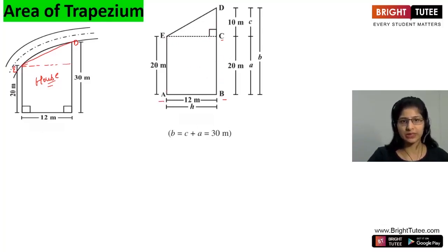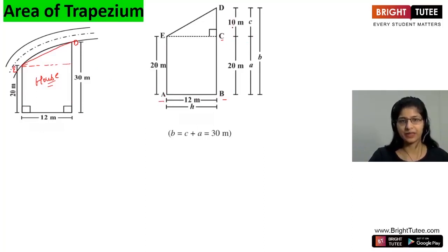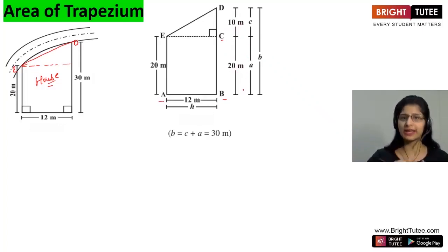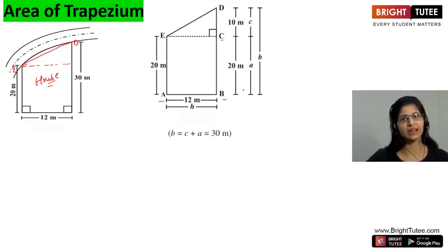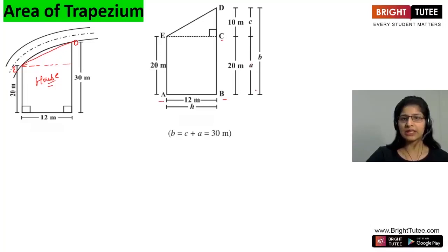Now suppose this is 20 metres — it is given to us in the question. And this is 12 metres. Now if this is 20 and the total is 30, then this much is 20 and the rest part is 10. Now we have divided into two segments. We are considering: 20 metres as A, 30 metres as B, 10 metres as C, and 12 metres as H.